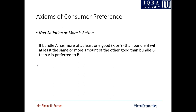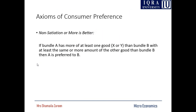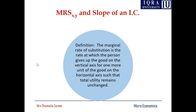The non-satiation or 'more is better' axiom means the consumer always wants to maximize utility. If bundle A has more of at least one good than bundle B with at least the same amount of the other good, then A is preferred to B. This can be explained through indifference curve analysis — if one indifference curve lies above the previous one, the higher indifference curve gives higher satisfaction or utility.